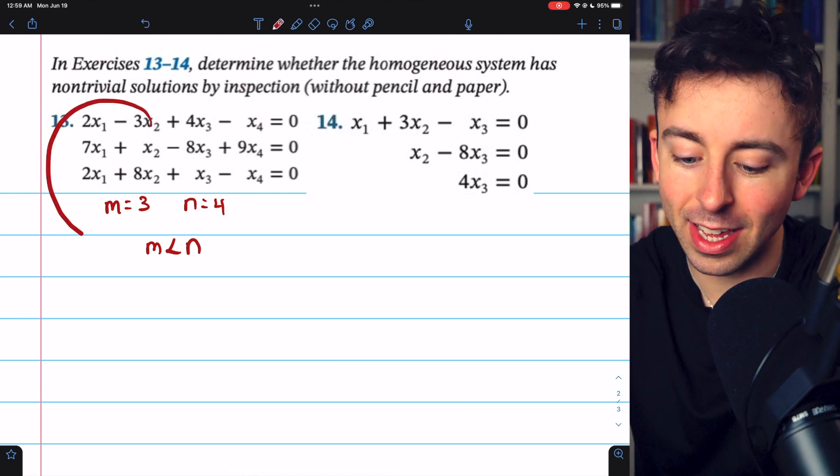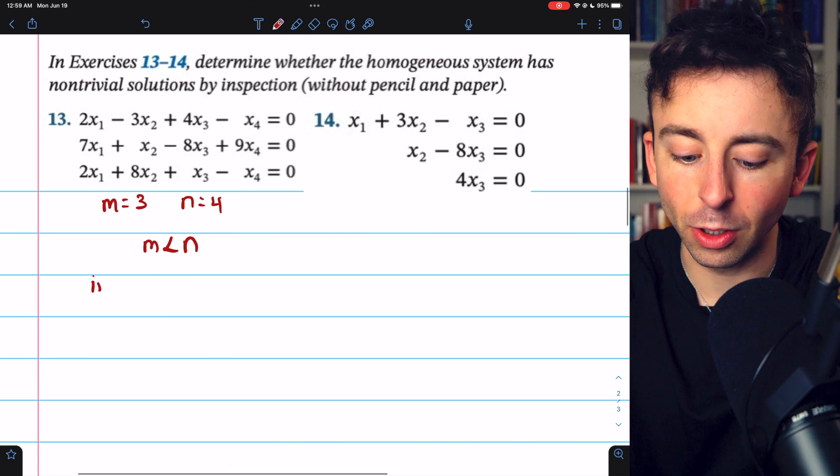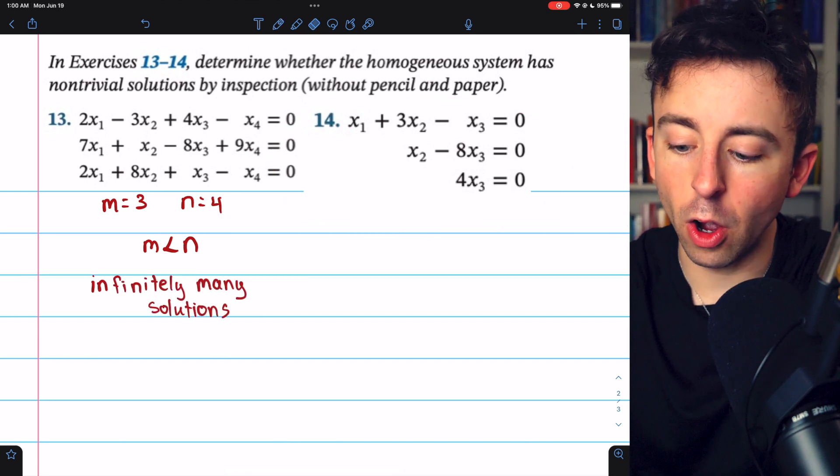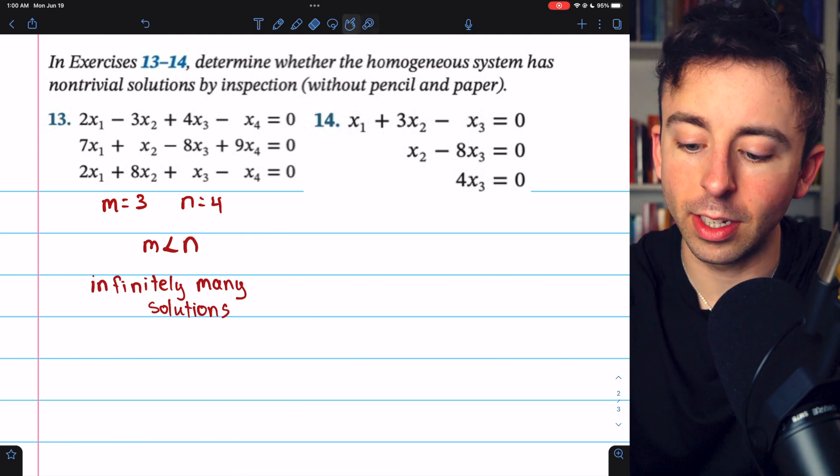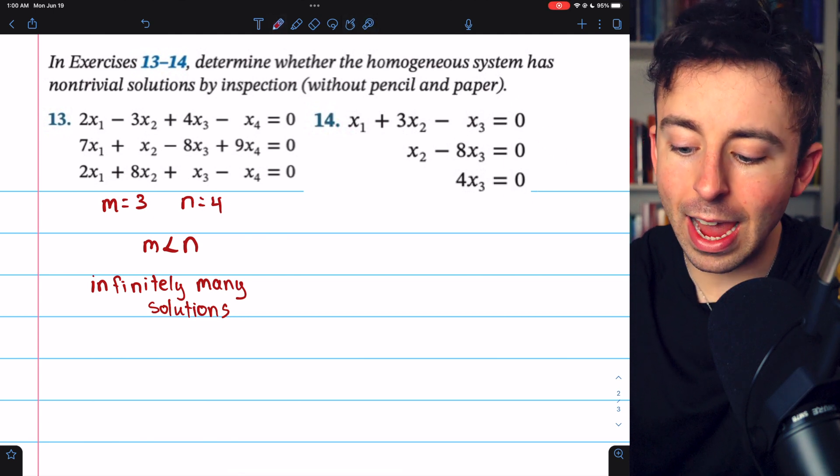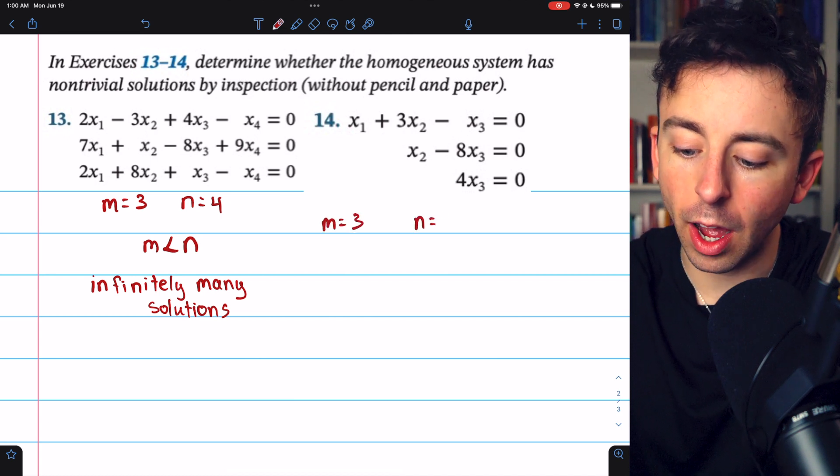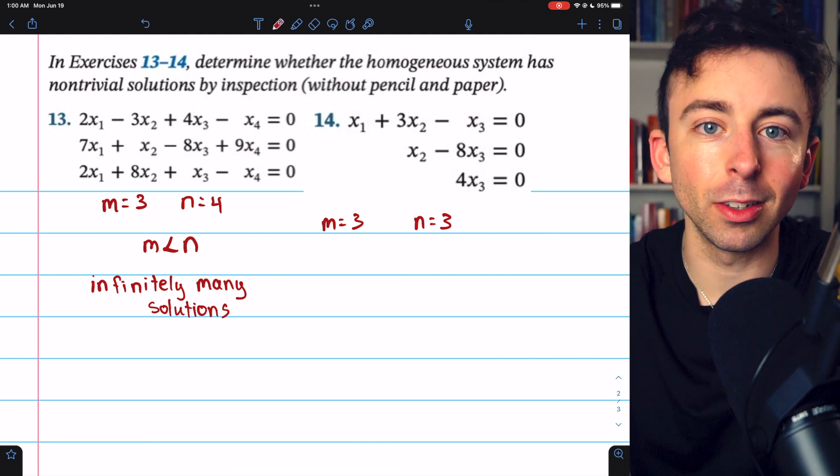it's guaranteed that this homogeneous linear system will have infinitely many solutions. In equation 14, on the other hand, we've got a homogeneous linear system. It's homogeneous because all of the constants are zeros. And we see that it has three equations and it has three unknowns. So we can't immediately say that there are infinitely many solutions.